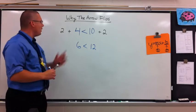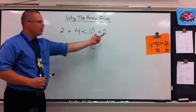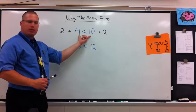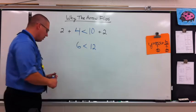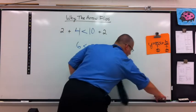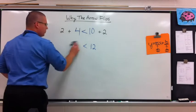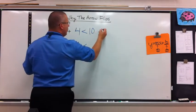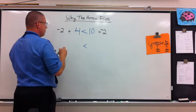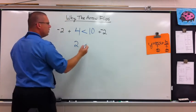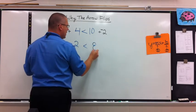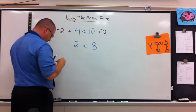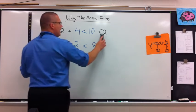6 is still less than 12. So that's why the rule is not about adding — it doesn't change. I can add whatever I want and it won't change the direction of the arrow. I can even add a negative number: 4 plus negative 2 is 2, and 10 plus negative 2 is 8. Is this inequality still true? The answer is yes. Adding will not change it.